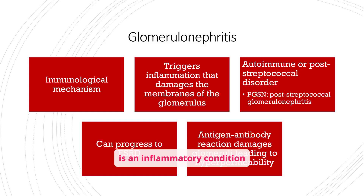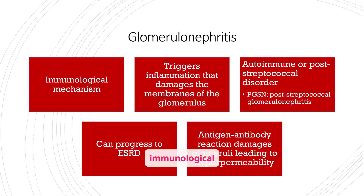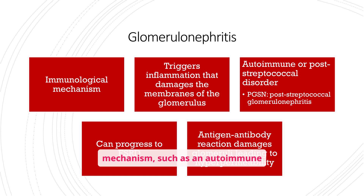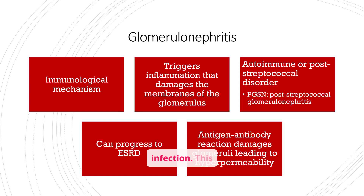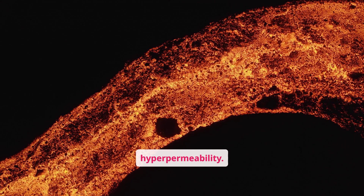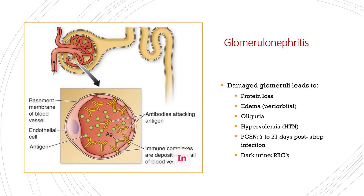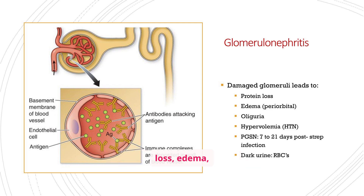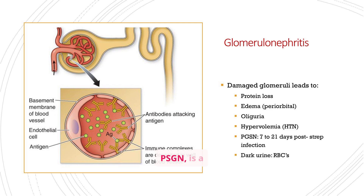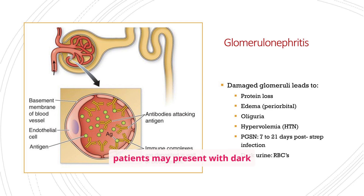Glomerulonephritis is an inflammatory condition affecting the glomeruli. It's often triggered by an immunological mechanism, such as an autoimmune reaction or post-streptococcal infection. This inflammation can damage the glomeruli and lead to hyperpermeability. The damaged glomeruli lead to protein loss, edema, oliguria, and hypervolemia. Post-streptococcal glomerulonephritis, or PSGN, is a common cause, and patients may present with dark urine.